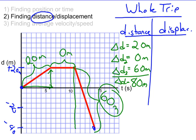But I'm not worried about direction when it comes to distance. I just know that there are 3 parts of this trip. One in which the distance is 20 meters, one in which the distance is 0 meters, and one in which the distance is 60 meters. For a total of 80 meters of total distance traveled.